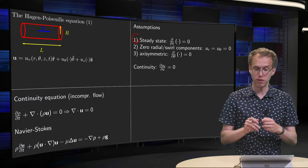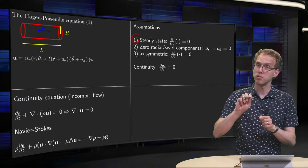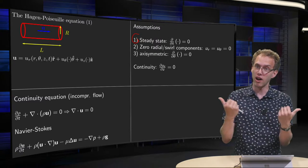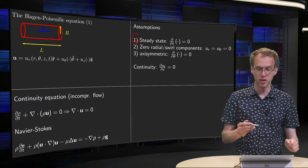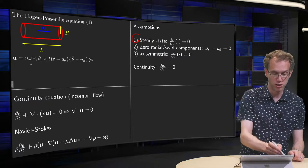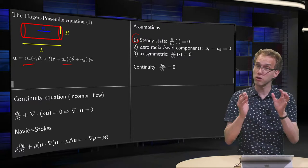And then we assume, furthermore, that our velocity is purely in the direction of the tube, so no velocity in the r-direction or in the theta-direction, so zero radial and swirl components of the velocity. So this u_r and this u_theta, those are both zero.